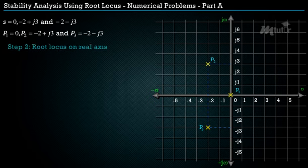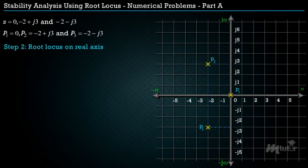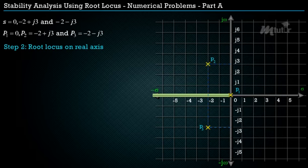Next, find the root locus on the real axis. There is only one pole on the real axis at the origin. If we choose any test point on the negative real axis, the total number of real poles and zeros to its right is 1, which is an odd number. Hence the entire negative real axis is part of the root locus, drawn as a bold line.